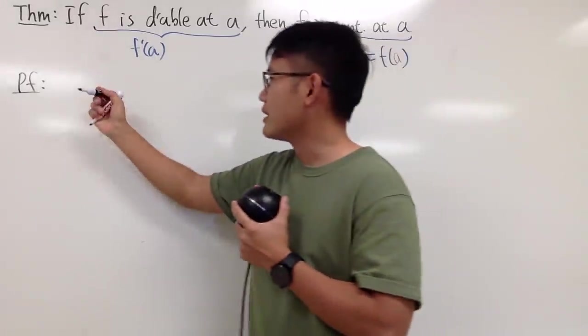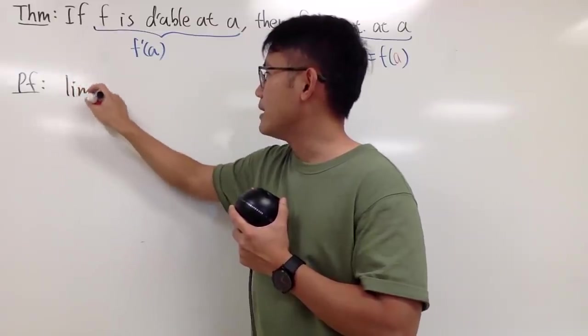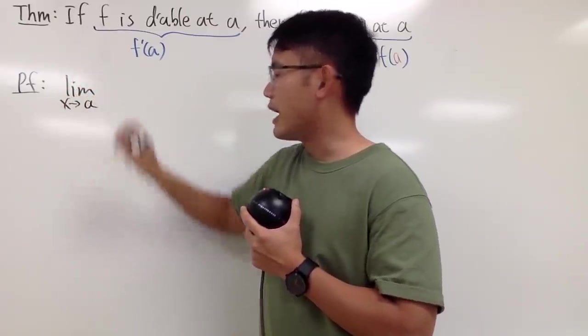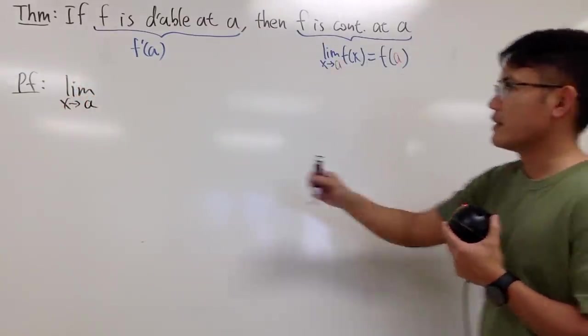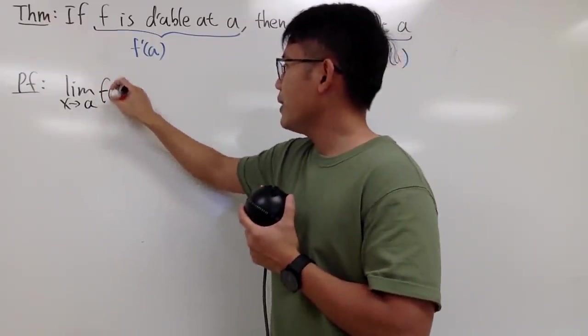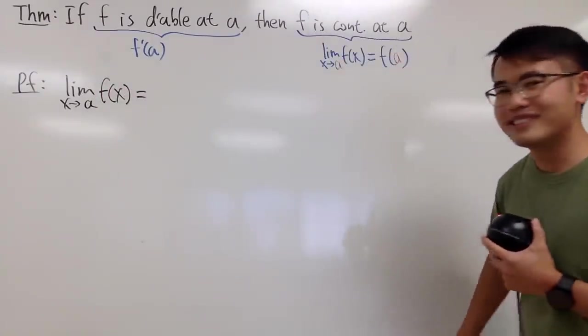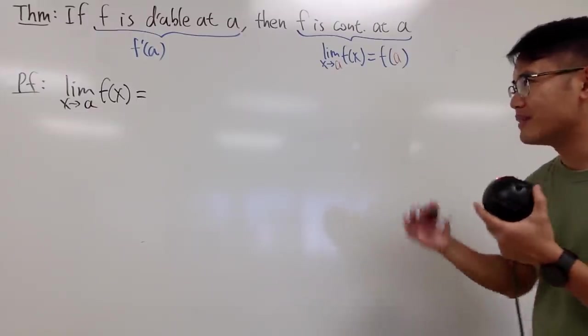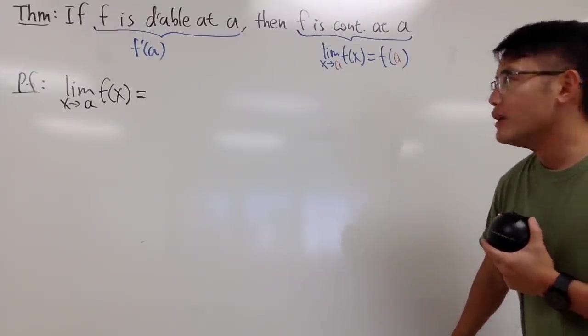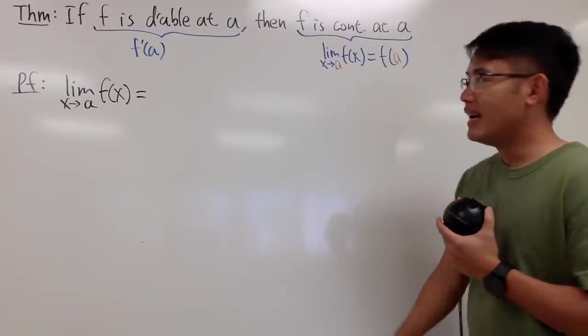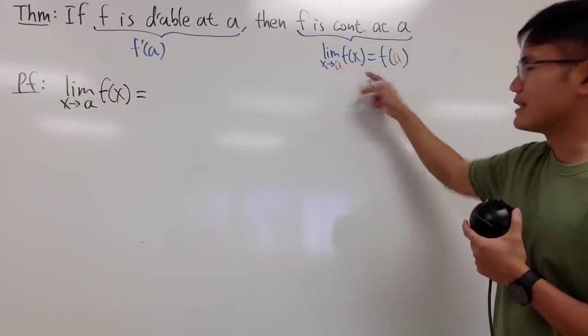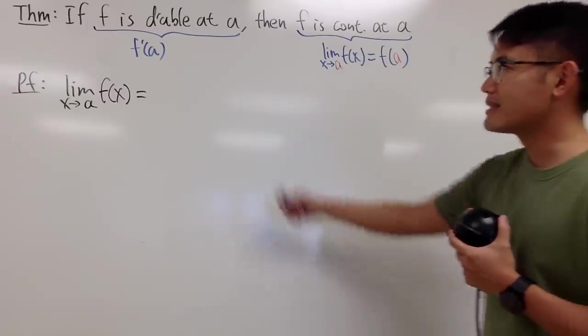So let's go ahead and put down the limit as x approaching a. And we have f of x, of course. And you're going to find yourself, you don't have a lot of things to work with. So this is the part that you really have to think hard. You have this on the left-hand side. I really want to just plug in a into x, but I cannot do that. I must somehow use this.